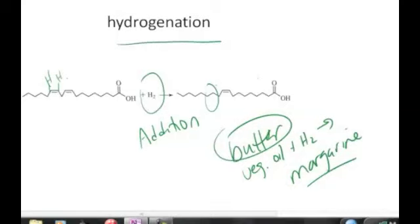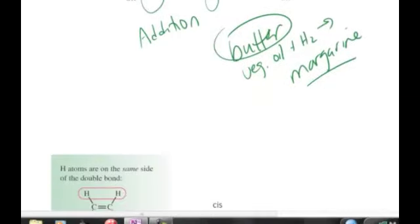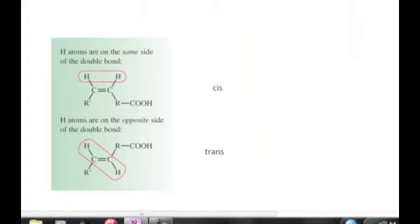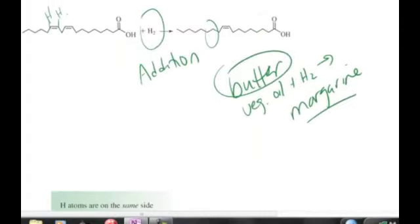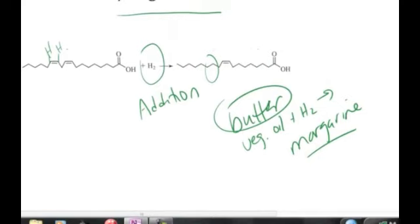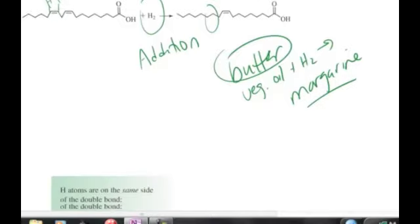These hydrogenated fats are actually worse, and the reason why they are worse is because when you have a polyunsaturated fatty acid, such as this here, linoleic acid, and you hydrogenate it, sometimes the hydrogenation occurs and you end up with what's called a cis conformation and sometimes a trans.